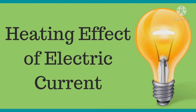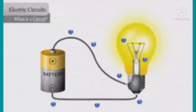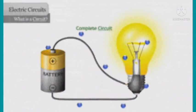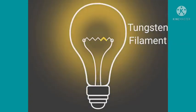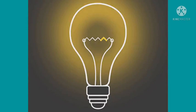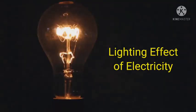The heating effect of electric current is also used in electric bulbs for producing light. When electric current passes through a thin, high resistance tungsten filament of an electric bulb, the filament becomes white-hot and emits light, and this is the lighting effect of electricity.